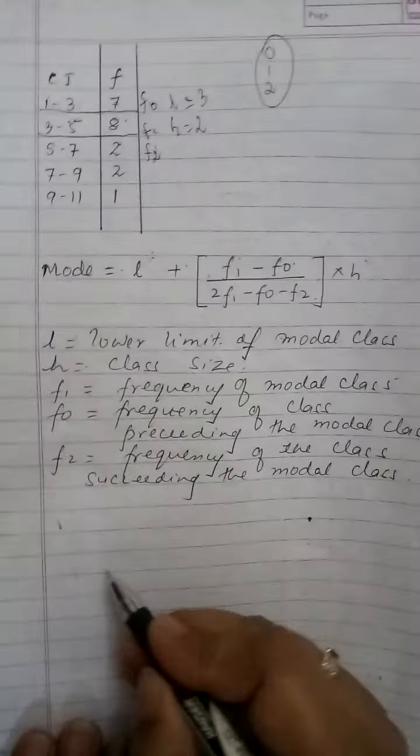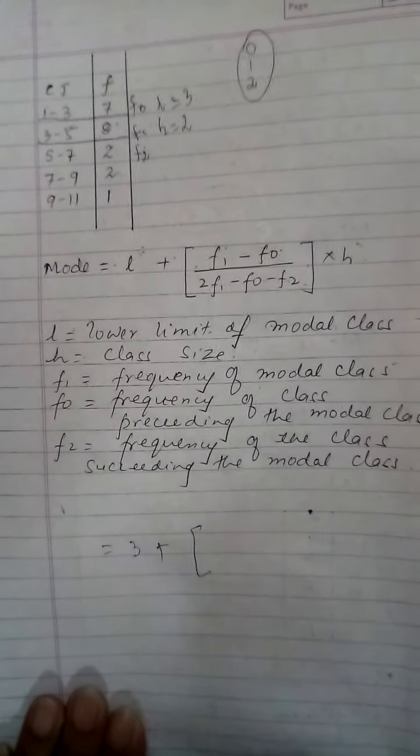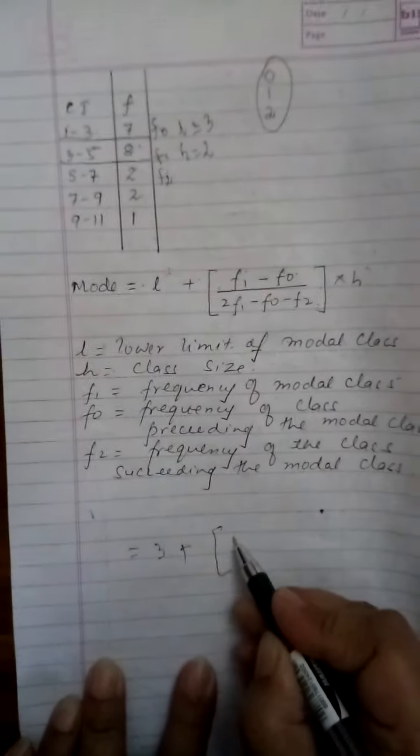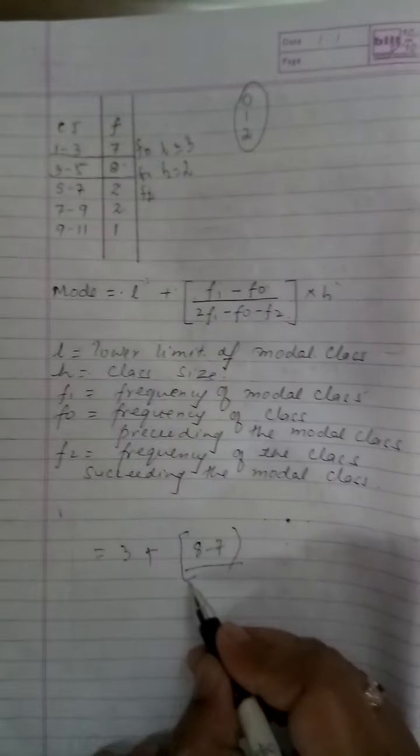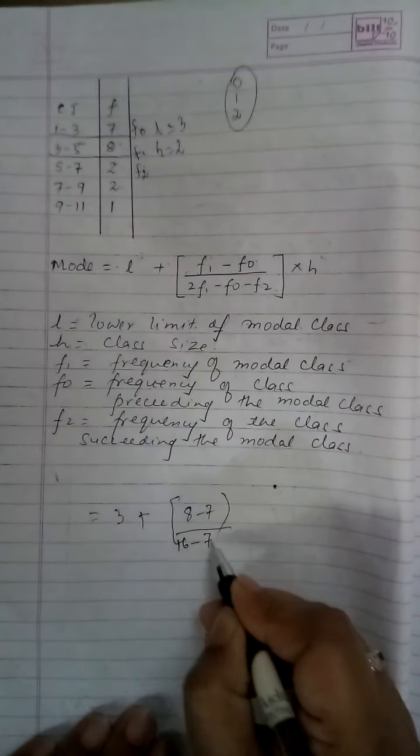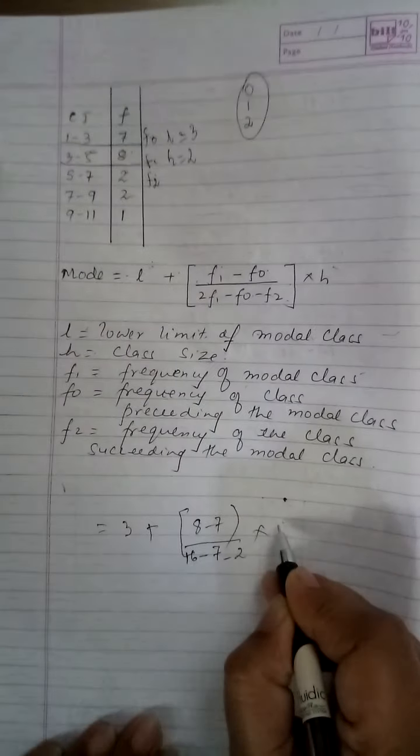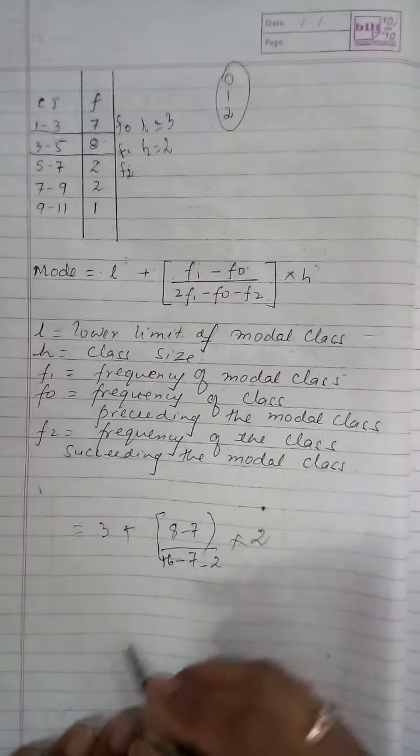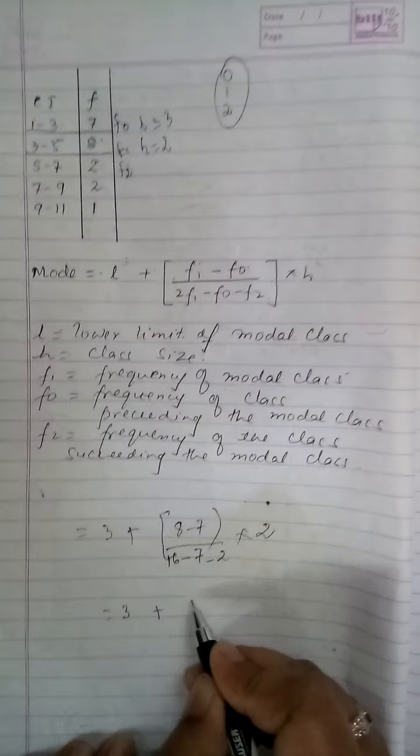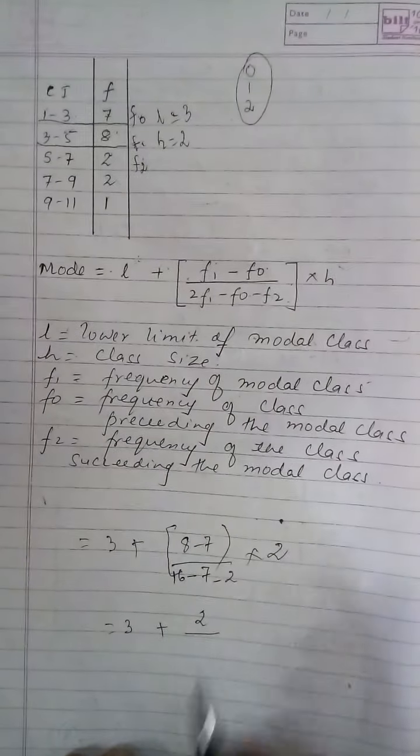Now putting these values in the above formula I get your l is 3 so I get 3 plus f1 minus f0, f1 is 8 minus 7, so I get 8 minus 7 upon 2f1, so 2 into f1 is 16 minus f0 is 7 and minus f2 is 2 into h is 3 minus 1 that is 2. Now when I solve this I get 3 plus 2 upon 7 minus 7 minus 7 minus 2 is minus 9 and 16 minus 9 is 7.